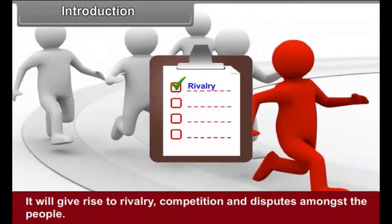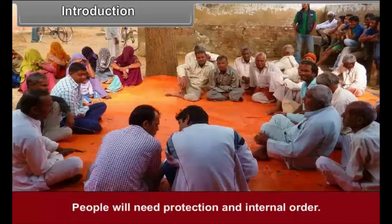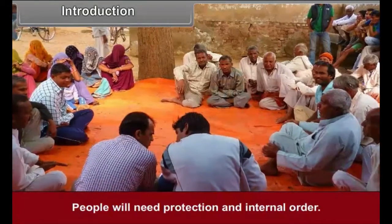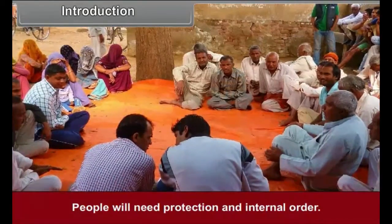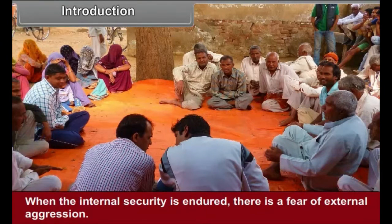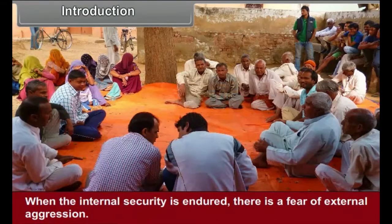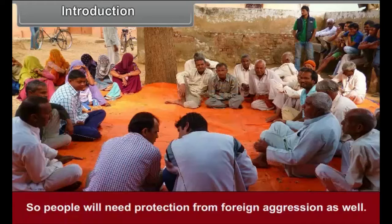Conflicting interests will make everyone suffer. It will give rise to rivalry, competition and disputes amongst the people. People will need protection and internal order. When internal security is endangered, there is a fear of external aggression. So people will need protection from foreign aggression as well.